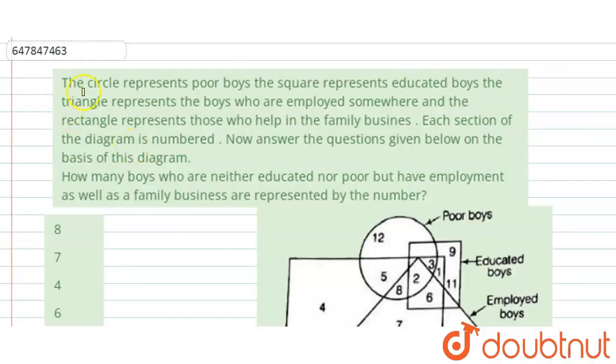Hello everyone, the given question is: the circle represents poor boys, the square represents educated boys, the triangle represents the boys who are employed somewhere and the rectangle represents those who help in the family business. Each section of the diagram is numbered. Now, answer the questions given below on the basis of this diagram.